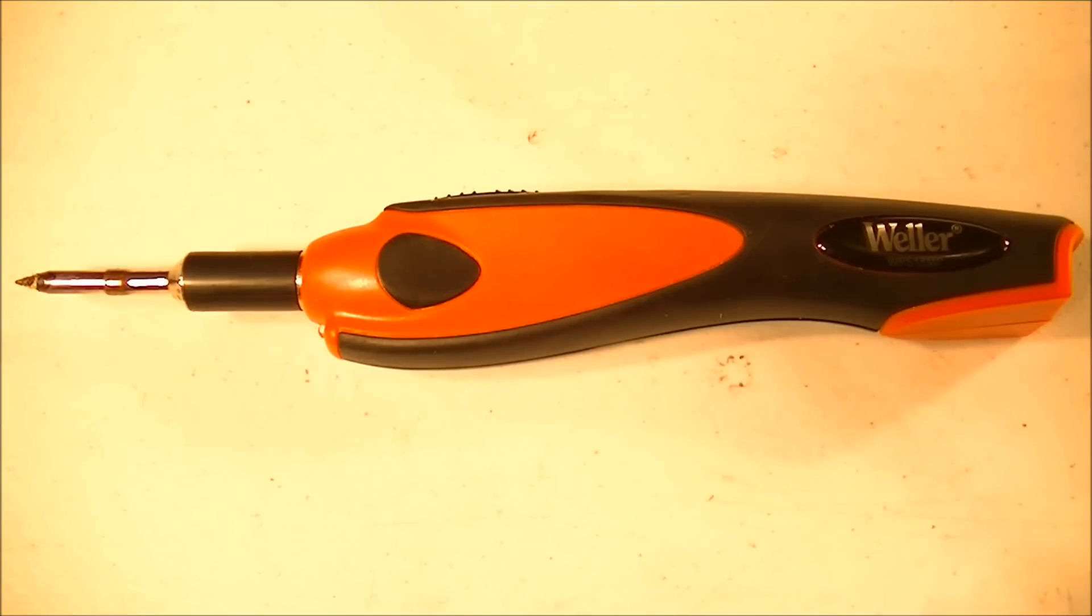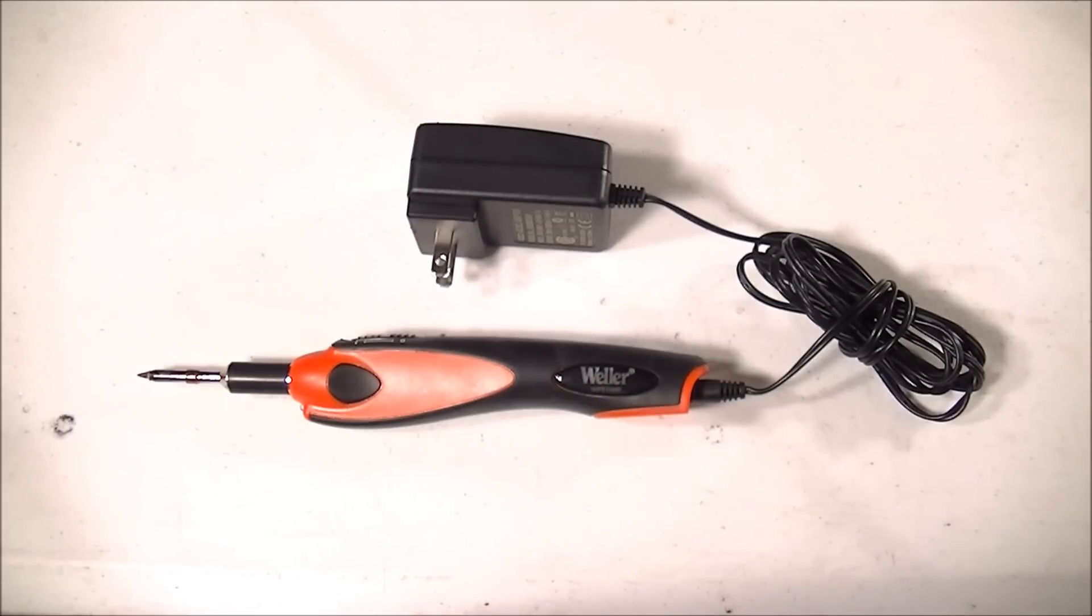If you're soldering wires to a circuit board then you're gonna want something that you can control the temperature on, but those can be pretty expensive. My only suggestion is you stay away from battery operated guns. You want something that's 115 volts that you can plug in. They generally get hotter and are more reliable than battery operated models.